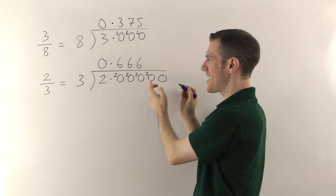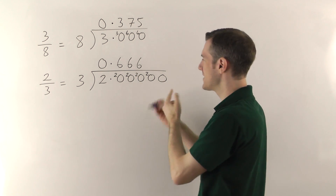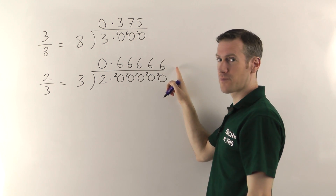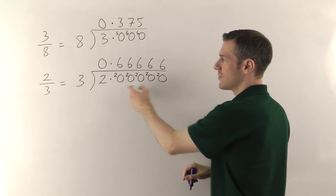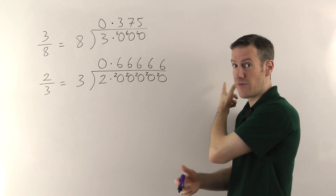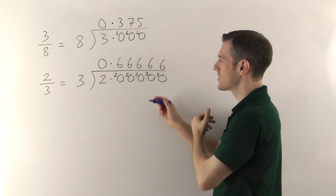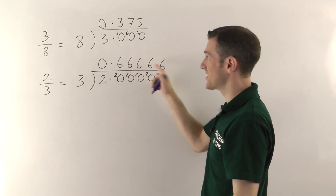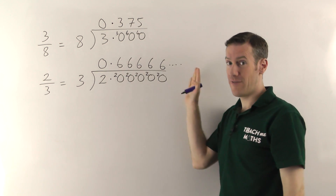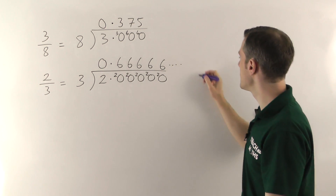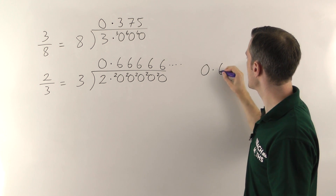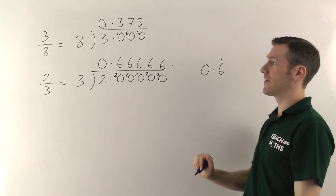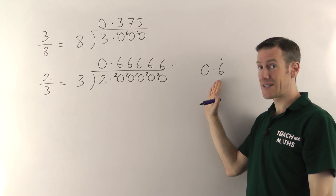You can see what's going to happen here — this is going to be 20 all the way along, because every time it's going to go in 6 times, remainder 2. So the 6s are going to go on forever, because 2 is just 2.0000 and the zeros go on forever. The answer — 2 thirds as a decimal — is 0.6666666 where the 6s go on forever. In maths, we call that a recurring decimal. You can write that as 0.6 with a dot above it, meaning 0.6 recurring, i.e. 0.66666 where the 6s go on forever. So 2 thirds as a decimal is 0.6 recurring.